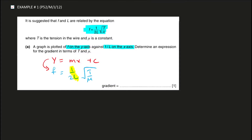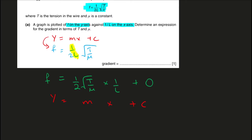1/L is plotted on the x-axis, so I'll separate it from the rest of the expression: (1/(2√(T/μ))) × (1/L). Since nothing is added to it, I'll write + 0. Comparing this with y = mx + c, the y-intercept is 0, and the expression in brackets becomes the gradient m. So the gradient is 1/(2√(T/μ)). That is the answer for the first part.